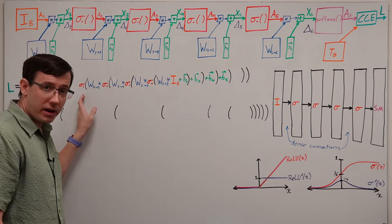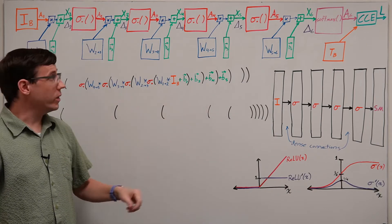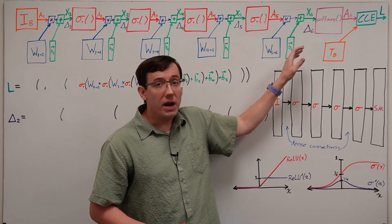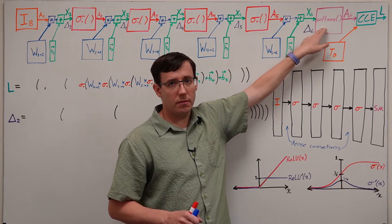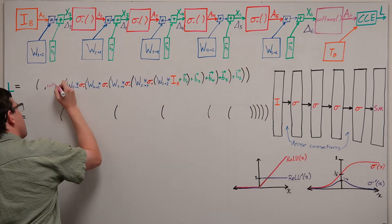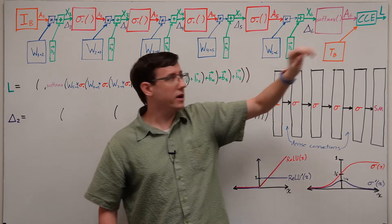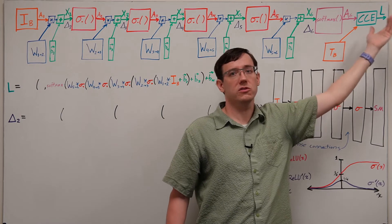Once we have an expression for the last hidden layer's activations, we still multiply by weights and add the bias, but now we apply the output layer's softmax activation. Then the output activations, along with the targets, become the inputs to the categorical cross-entropy calculation that gives us the loss.